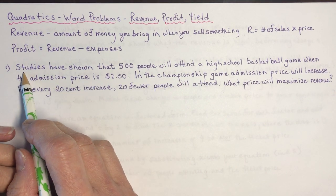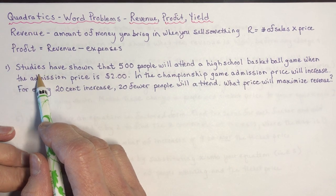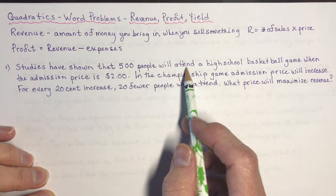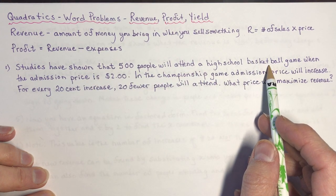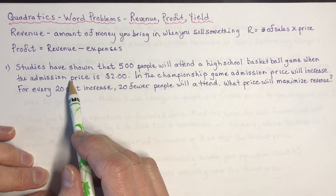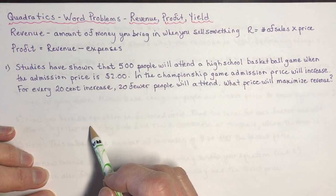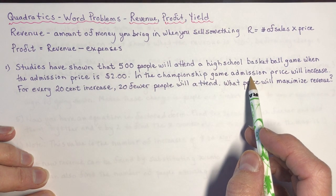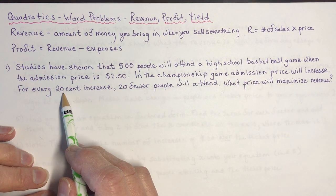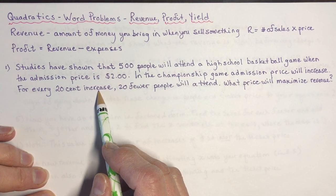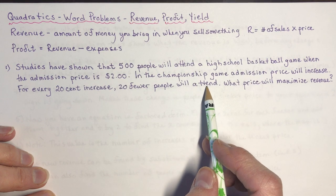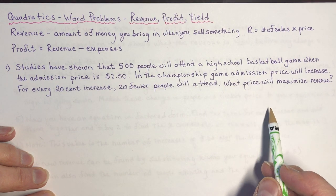Okay, let's look at a problem. Studies have shown that 500 people will attend a high school basketball game when the admission price is $2. In the championship game the admission price will increase. For every 20 cent increase, 20 fewer people will attend. What price will maximize revenue?